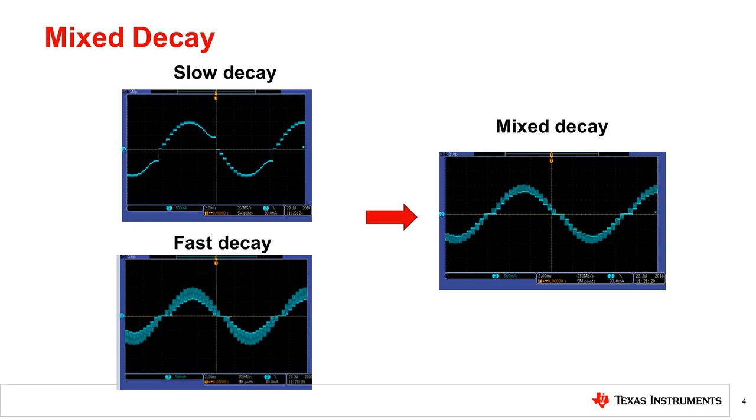Mixed decay, as it sounds, is a mixture of fast and slow decay. Mixed decay begins as fast decay and after a certain time, the full bridge switches to slow decay for the remaining period of the fixed off time.